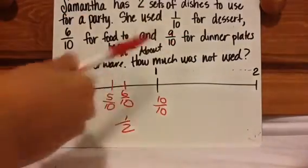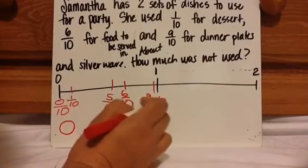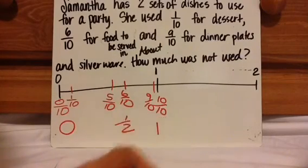And then 9/10 for dinner plates and silverware. 9/10 would be right around here, so it's like she used one whole.